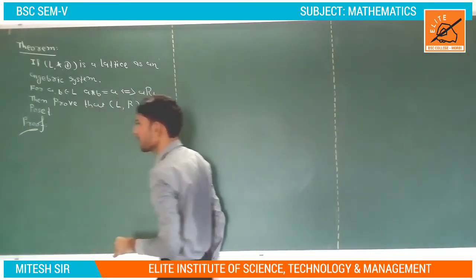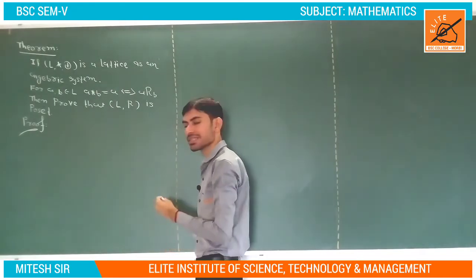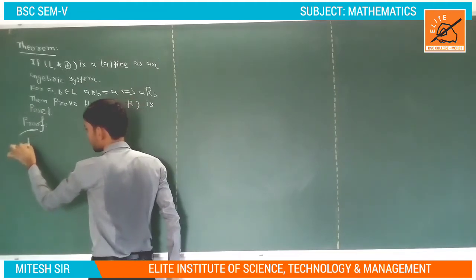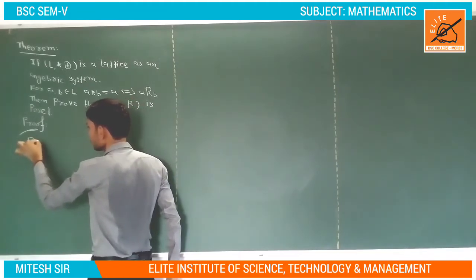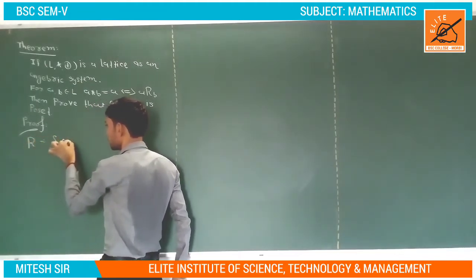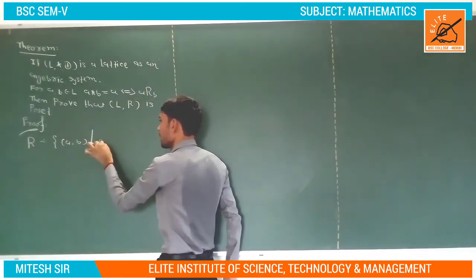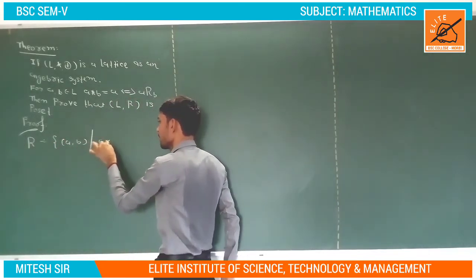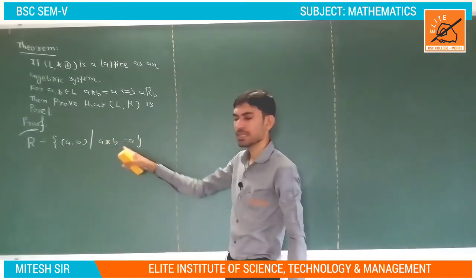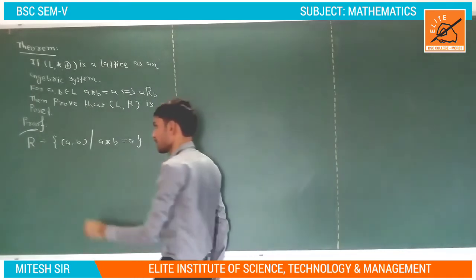First of all, we prove our relation is reflexive. We have defined our relation R as containing the pair (a, b) where a★b = a. Now to prove this relation is reflexive, antisymmetric, and transitive. The definition of reflexive is: for every a belonging to L, a is related to a.